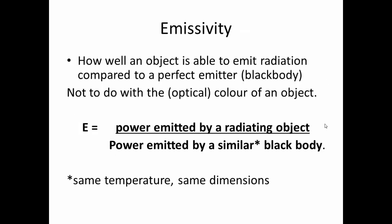Now we look at emissivity. This is how well an object is able to emit radiation compared to a perfect emitter — an ideal emitter called a black body. The black body is not really to do with the optical color of an object. The color we see is in a very narrow band of radiation; the visible part of the spectrum is a tiny portion of the overall electromagnetic spectrum. Emissivity is the power emitted by radiation compared to what it would be if the object were a black body, or in other words, a perfect emitter.